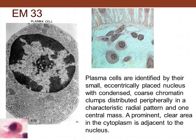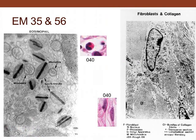The rough endoplasmic reticulum produces antibody protein. In an H&E preparation, the large plasma cell is visible with a Golgi apparatus nearby — seen as a clear region. Looking at EM35, we see an eosinophil with a lobulated nucleus and large red granules. These granules are large relative to the mitochondria and contain a crystalline core.